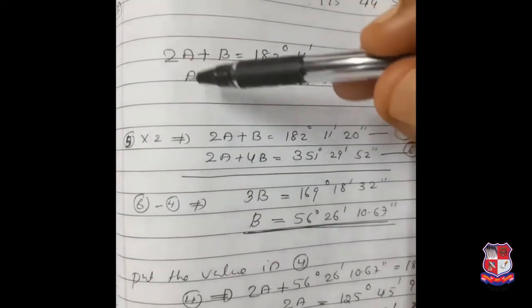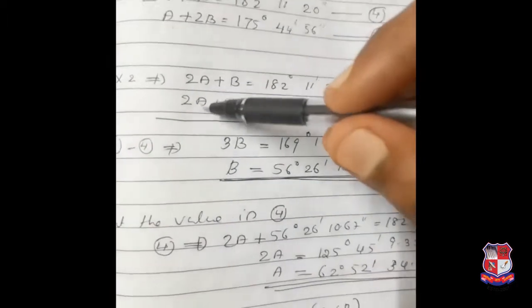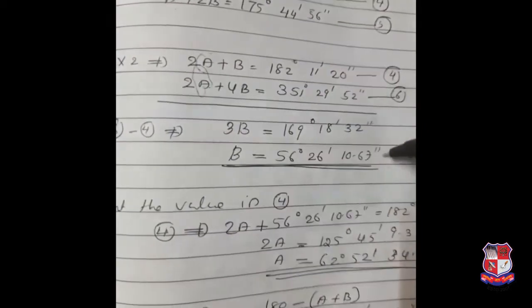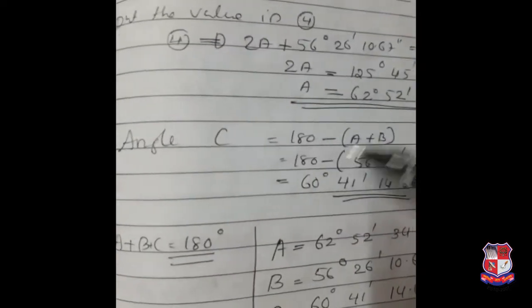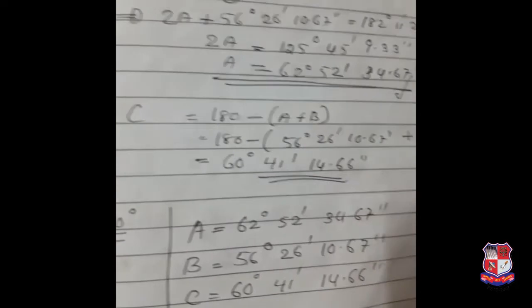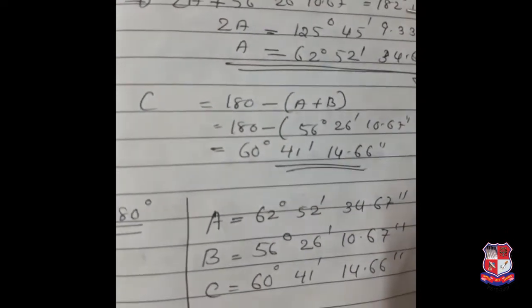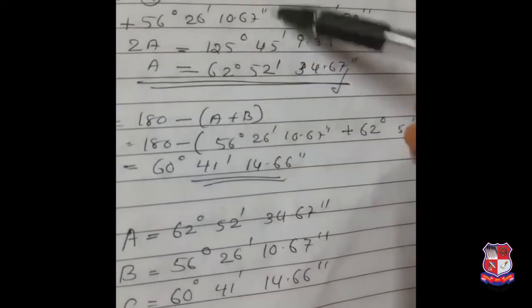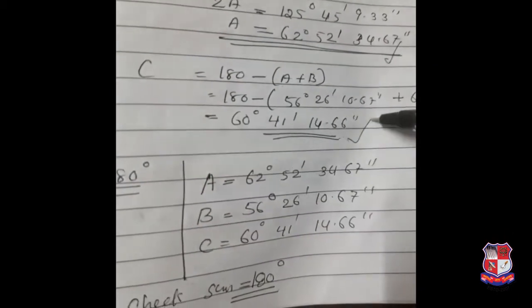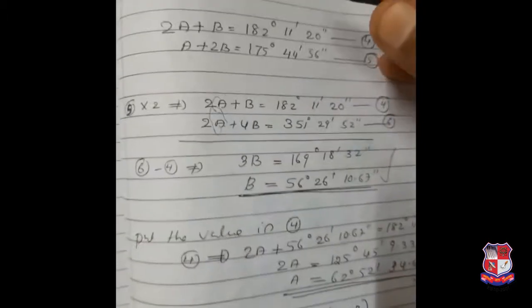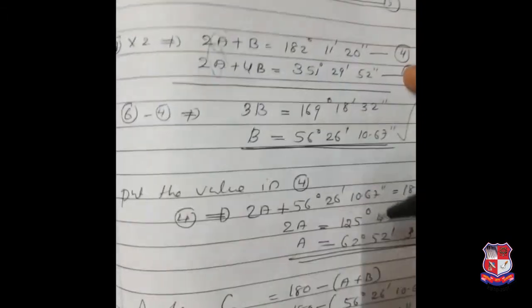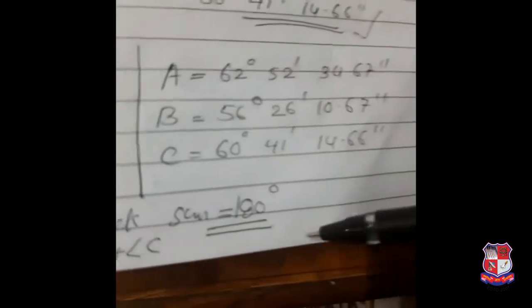Multiply one equation and solve the system to find the unknown quantities A and B. From these two equations, solving gives 3B, so we get B. Substitute back to find A as well. Then C equals 180 minus (A + B), so we add the two A + B values to find C. As a check, you can verify that A + B + C equals 180 degrees.